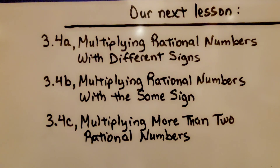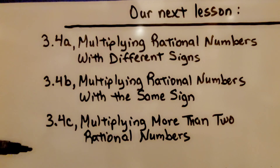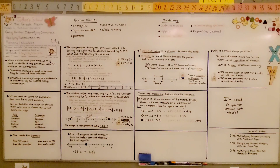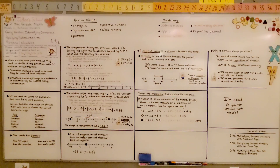We've completed lesson 3.3 and we're moving on to 3.4, which is split into three parts. The next one is multiplying rational numbers with different signs. If there's anything to take away from this, it's that when you see integer or rational number subtraction, you can add the opposite. Have a wonderful day and please join me for 3.4.